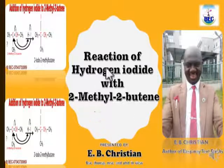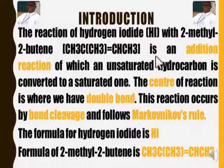Introduction: the reaction of hydrogen iodide (HI) with 2-methylbut-2-ene, CH₃C(CH₃)=CHCH₃, is an addition reaction in which an unsaturated hydrocarbon is converted to a saturated one. The center of reaction is where we have the double bond. The reaction occurs by bond cleavage and follows Markovnikov's rule.